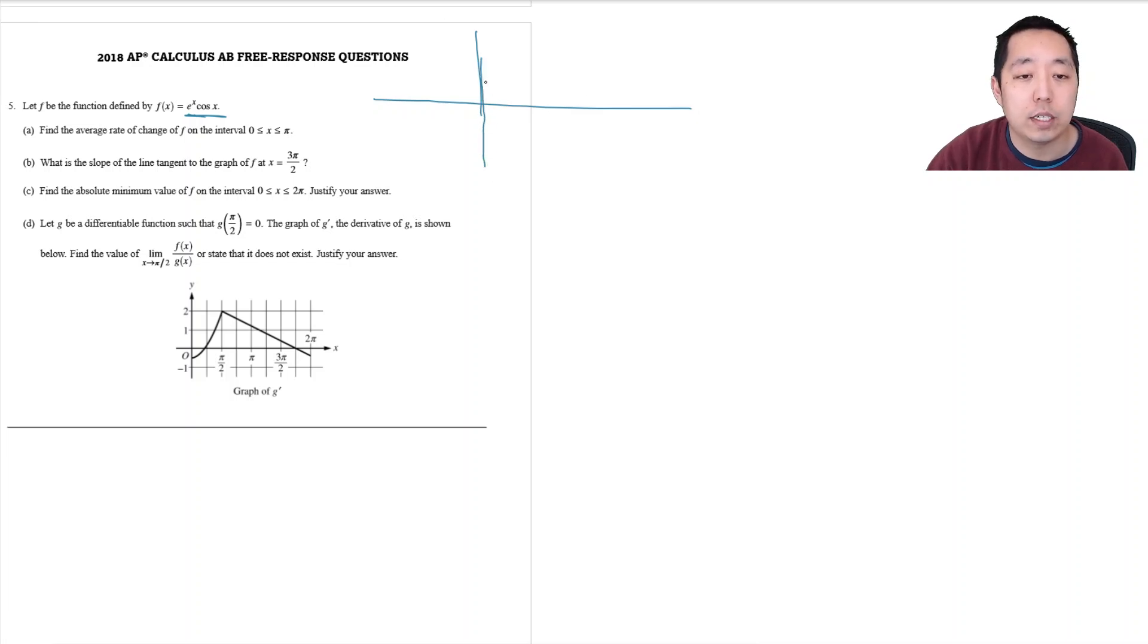I know that cosine looks like this over a 2 pi period and then I know e to the x starts at 1, e to the 0 is 1 and then it goes up like this. So the combination of the two is going to be the product of those two curves together.